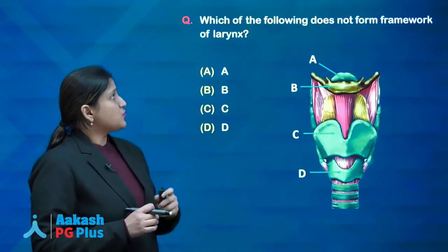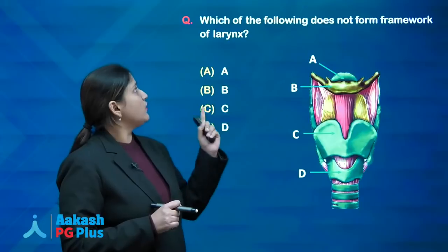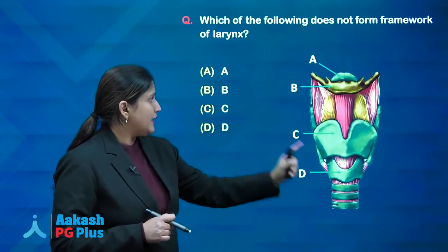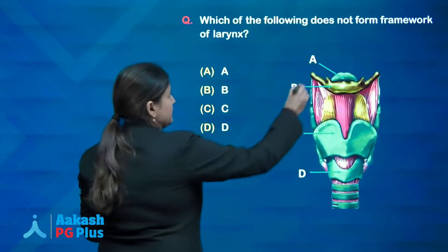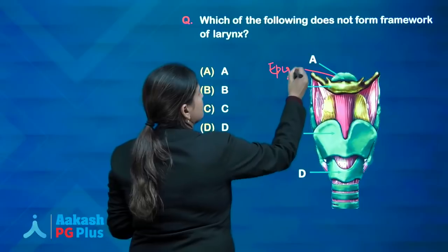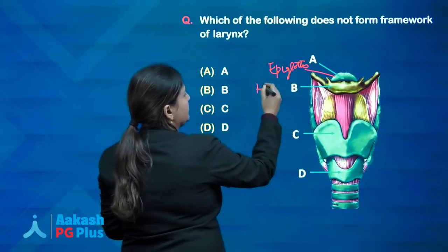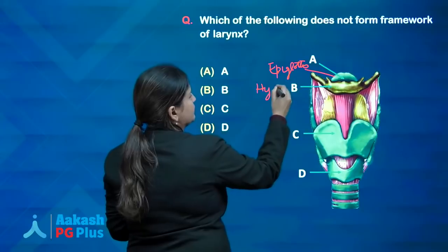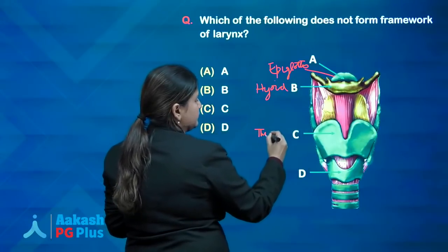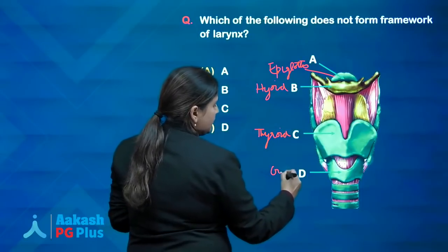The first question: which of the following does not form the framework of the larynx? Option A is epiglottis, B is hyoid, C is thyroid, and D is cricoid.